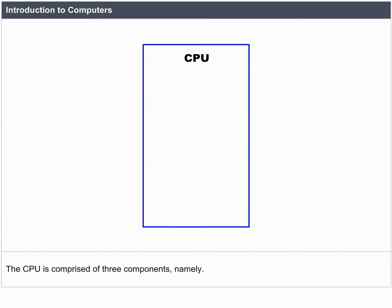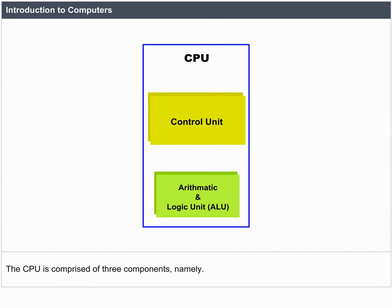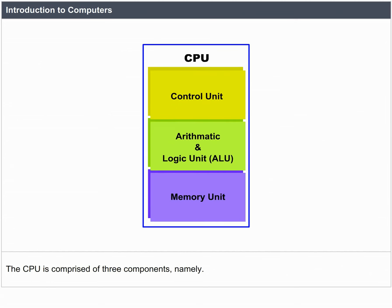The CPU comprises three components, namely: Memory Unit, Control Unit, and Arithmetic and Logic Unit.